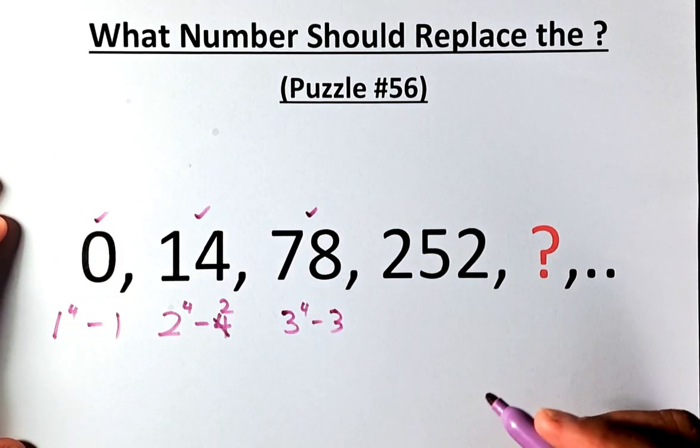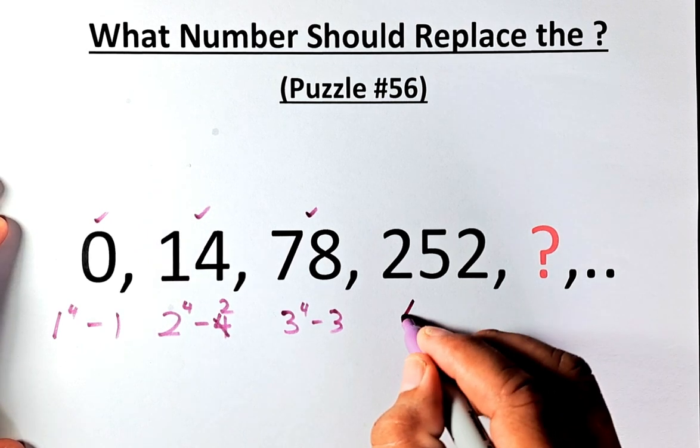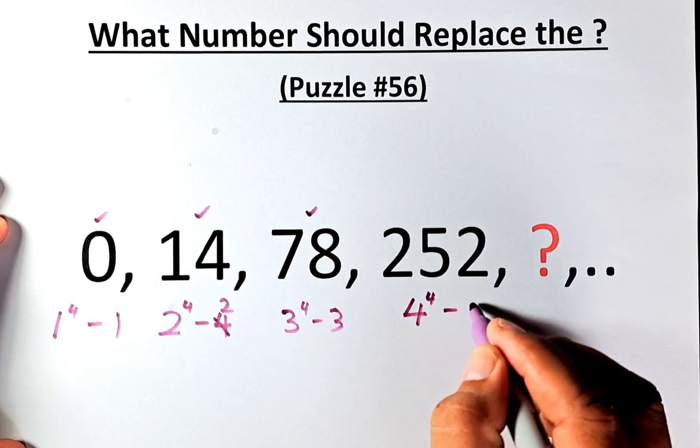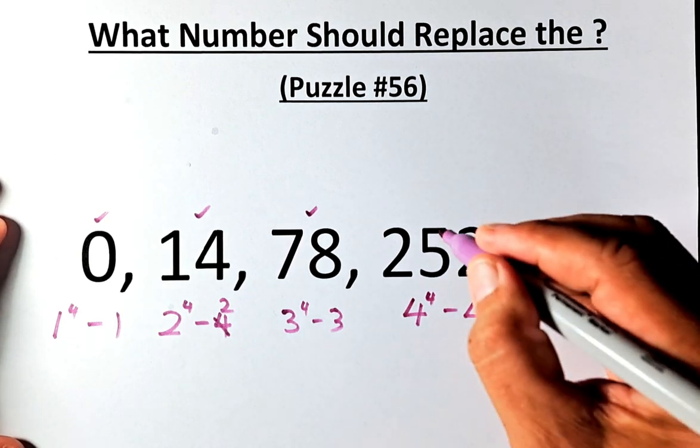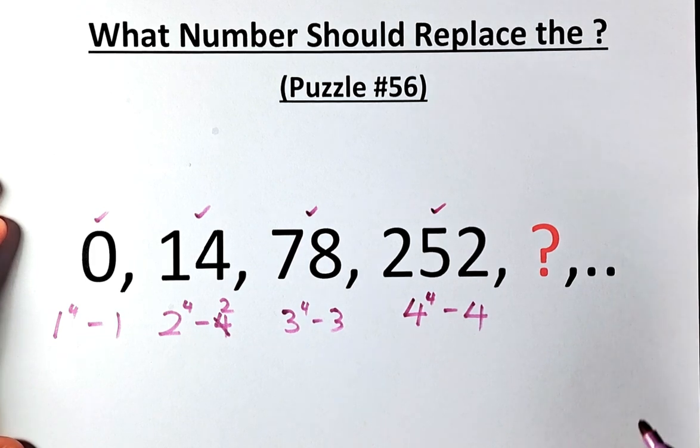And now we're going to do the 252. As you know it's going to be 4 to the power of 4 minus 4. 4 to the power of 4 is 256, 4 power 4 is 256 minus 4 will give you 252.